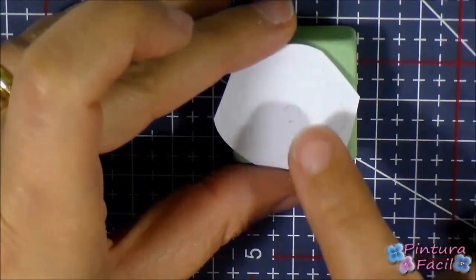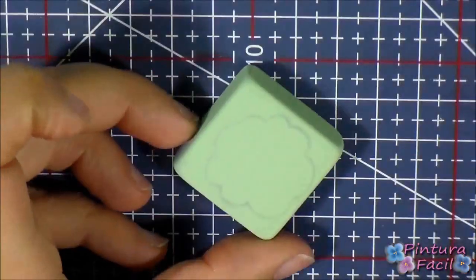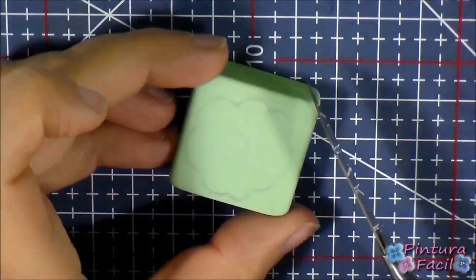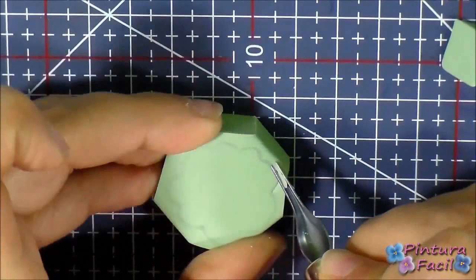Transfer on another eraser the bigger flower design. Cut the surplus and then carve the flower outline using the gouge.